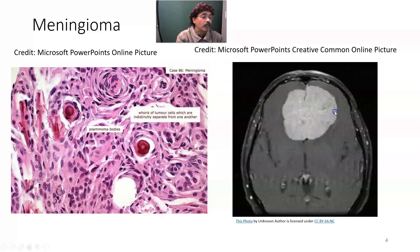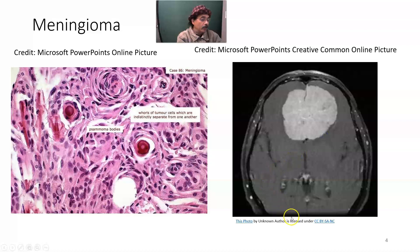The meningioma mass can occur anywhere. In this case it is on the posterior aspect, in a situation where it may damage the olfactory function or sense of smell.